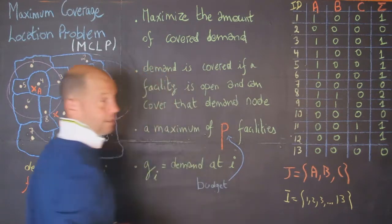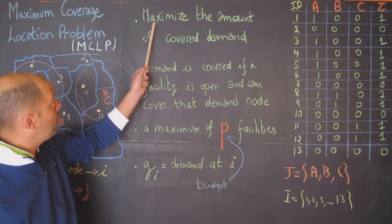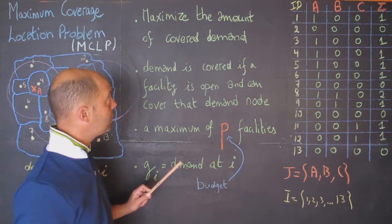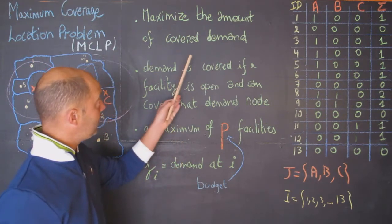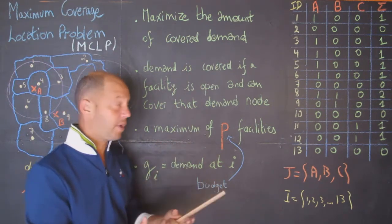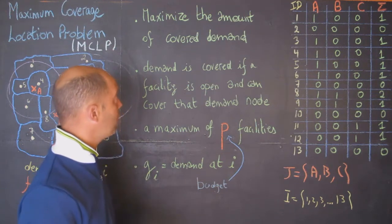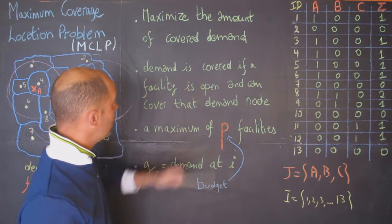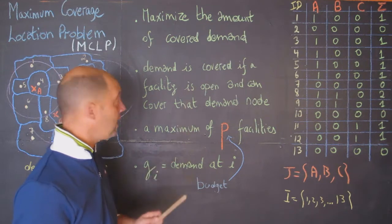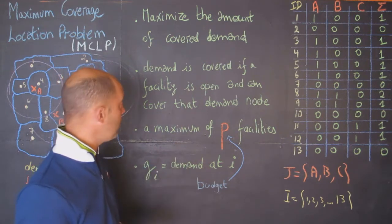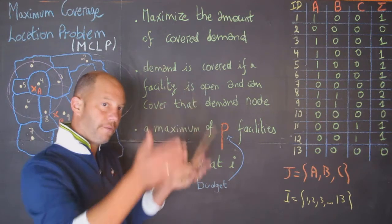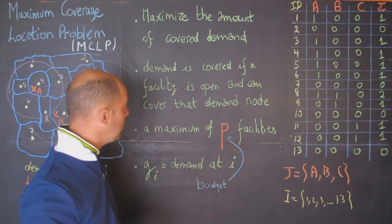So what are the objectives and the constraints? Our objective is to maximize the amount of covered demand. That demand could either be at the individual level or aggregated at the geographic unit. The demand is covered if and only if a facility is open and can cover that demand node — for instance, a facility is within reach of that demand node.